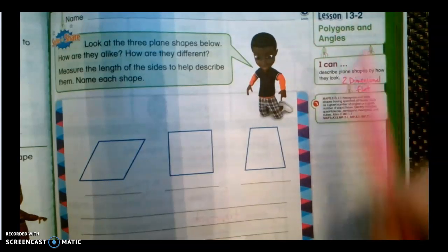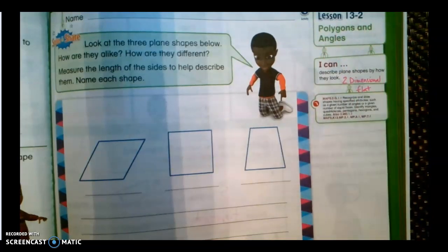So we have to learn these vocabulary words here. A polygon is a closed plane shape that has straight edges. Oh my goodness, that was a lot. It's really not though.